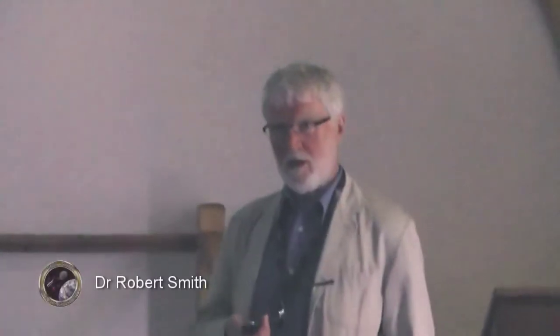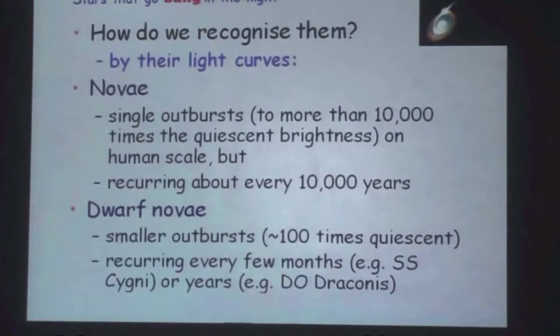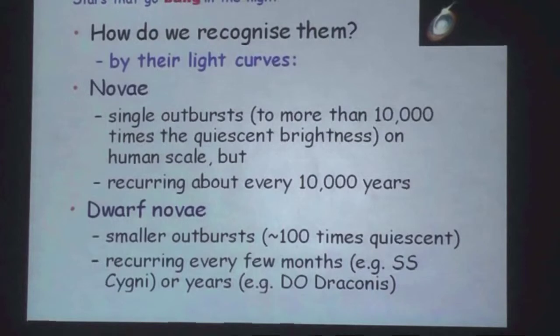It must recur, and the recurrence timescale is of the order of 10,000 years, which is why we only see them once. Let me introduce the dwarf novae first. These are rather smaller outbursts — only about 100 times the quiescent brightness — but they're much more interesting from the point of view of the observer because they recur every few months, sometimes every few years. So there are timescales of months to years between outbursts, and if you watch one of these objects for long enough, you're bound to catch it in outburst at some point.